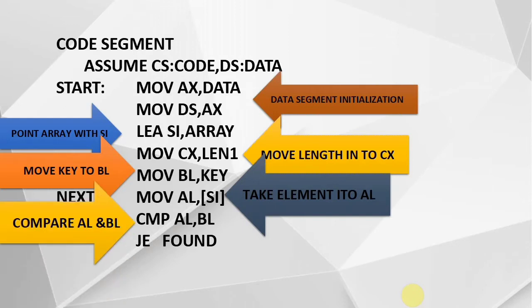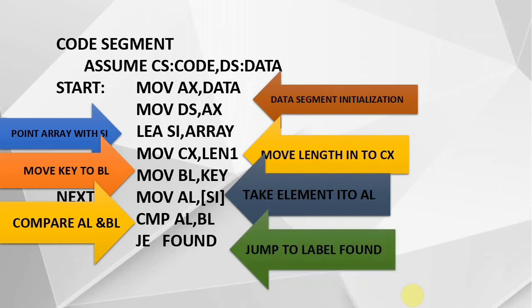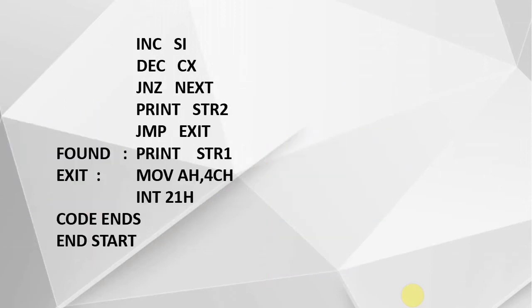AL holds the current array element and BL holds the key. A comparison is performed between AL and BL. If they are equal, a JE (jump if equal) instruction jumps to the label 'found'. At the 'found' label, the macro prints STR1, which is 'key found'.